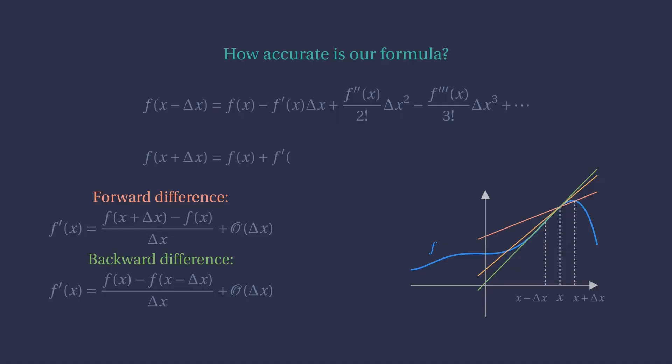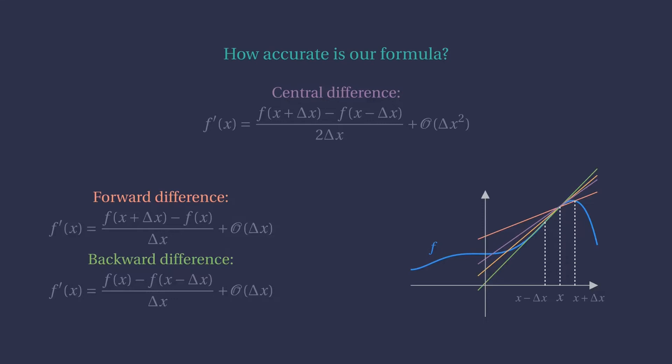Could we do better? In fact, we can. Just subtract the two Taylor expansions we use to find the forward and backward formulas. Rewriting to find the derivative of f, we find the formula for the central difference. And lo and behold, it is second-order accurate. So if we decrease the delta x by ten, we expect roughly a hundredfold decrease in the error of our approximation.